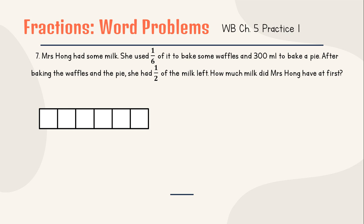1/6 of it is for waffles and 300 milliliters to bake a pie. But we do not know how many boxes or units is for 300 milliliters, so skip it and go to the next information. We know that half of the milk left, so half of this means 3 boxes. How do you know that is 3 boxes? We have 6, and half of 6 is of course 3. So this 3/6, or half, was left.